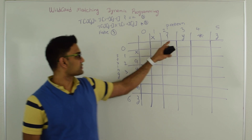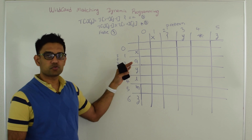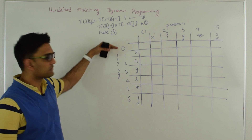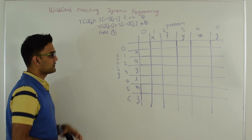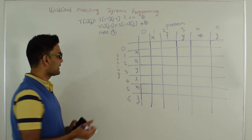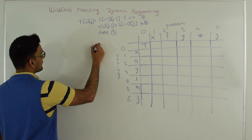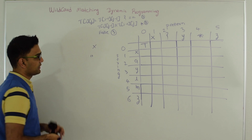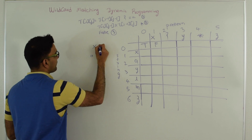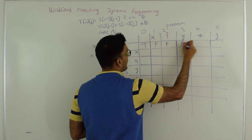Here my pattern is X?Y*Z and my string is XAYLMZ. We are going to fill up this two-dimensional boolean array from left to right and get our answer at the bottom-right corner. T[0][0] represents whether an empty pattern matches an empty string — yes, so this value is true. If our pattern is X and our string is empty, they don't match, so that value is false. Similarly, X? with an empty string is also false, and everything on this first row will be false.